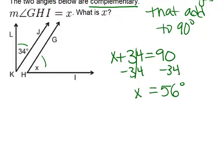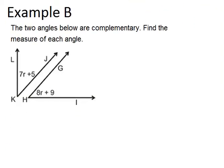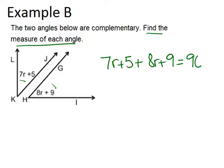Alright, moving on to example B. This one says the two angles below are complementary, find the measure of each angle. Notice that this time we're not asked to solve for x, we're supposed to find the measure of each angle in the end. So we know that the two angles are complementary, so that means that these two expressions have to add up to 90 degrees. So 7r plus 5 plus 8r plus 9 has to equal 90 degrees.